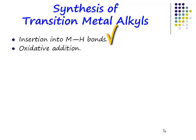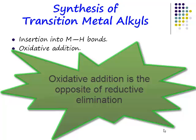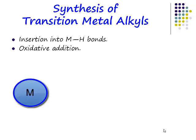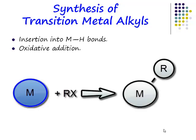You can have insertion into metal hydride bonds, so you can insert an alkene into a metal hydride functionality. Oxidative addition — you can take an alkyl halide and oxidatively add. Oxidative addition is the opposite of reductive elimination. It's where you add a metal alkyl halide to a metal and make a new metal-carbon and a new metal-halide bond. Your coordination number increases by two and your oxidation state increases by two — we call that an oxidative addition.